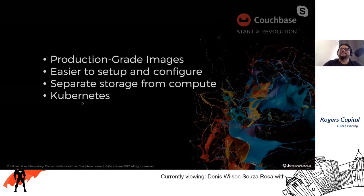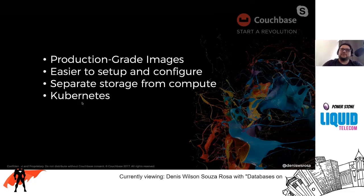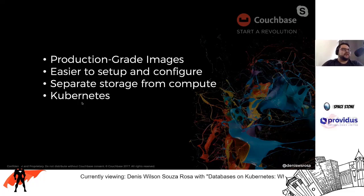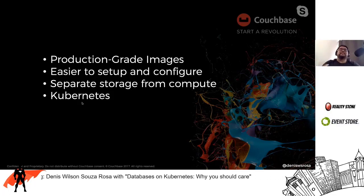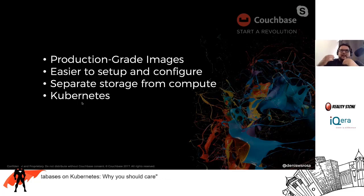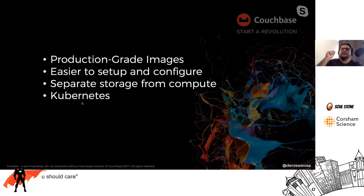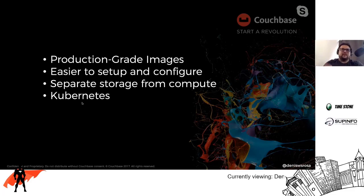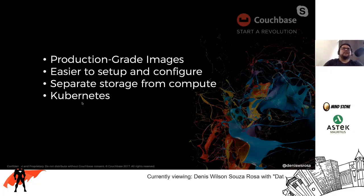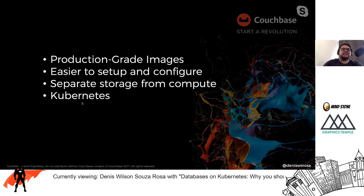So what changed? Why did we completely change our minds in just two years? A few things changed: first, production-grade images — pretty much all database providers now have official images tested to run properly on containers. Containers are easier to set up and run compared to bare metal. You can also separate storage from compute, which is great for big data, and of course Kubernetes has matured significantly.